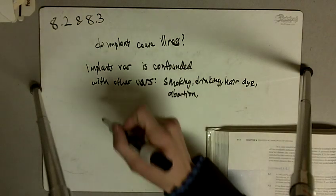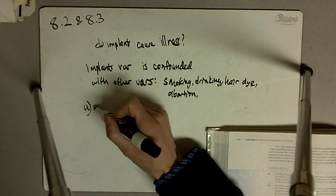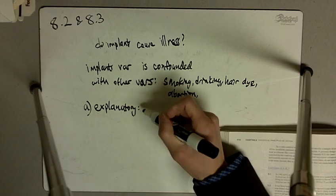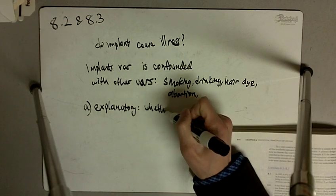And 8.3 says what is the explanatory variable? And that is whether someone has implants or not.